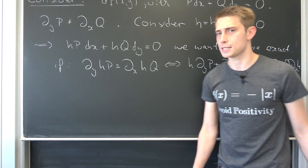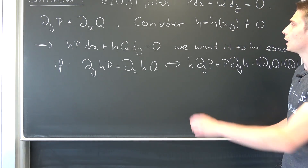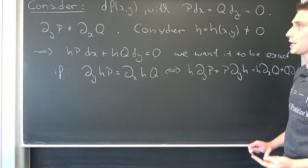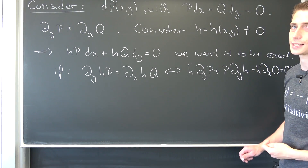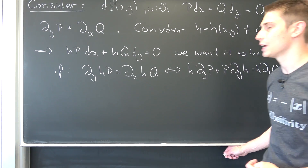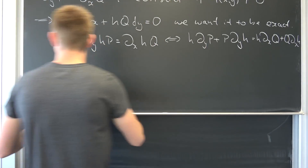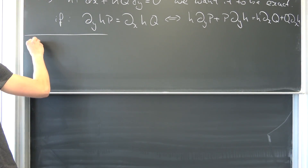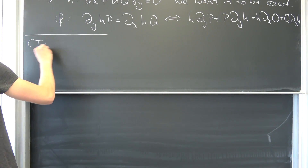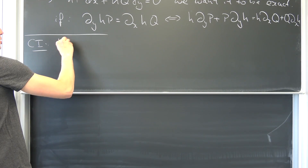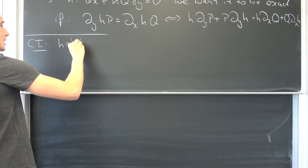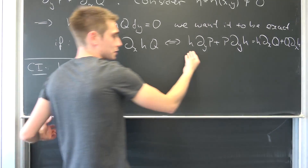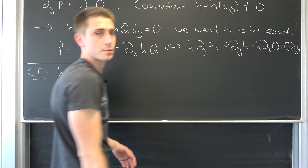So what are the main cases you could encounter? Two really simple cases are when H is just H of x, or when H is just H of y. For the first case, let us consider H being just H of x. Now we have this formula, which makes it a bit easier.